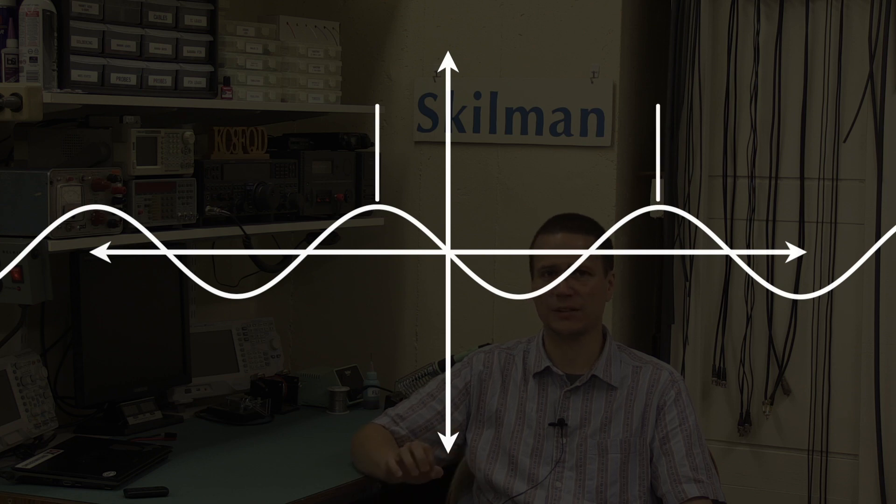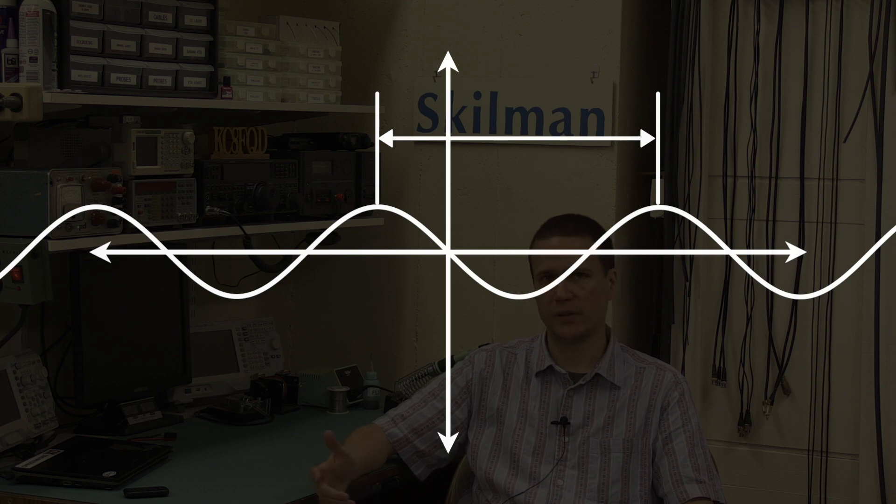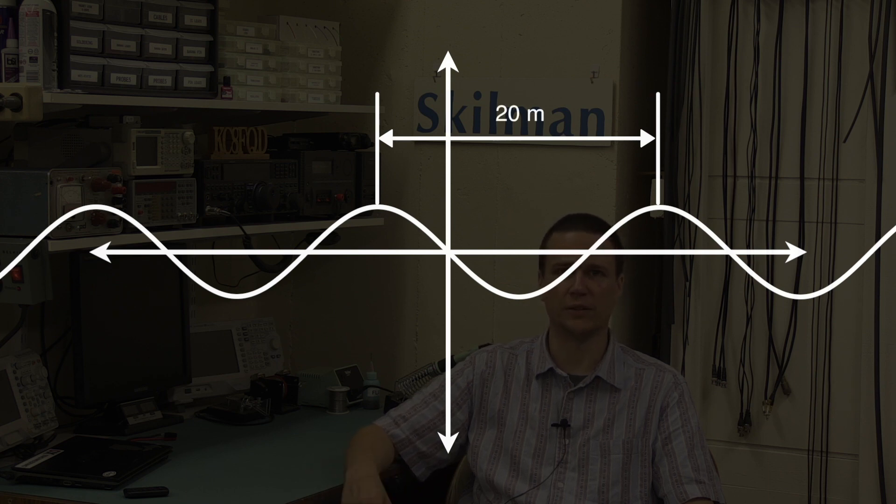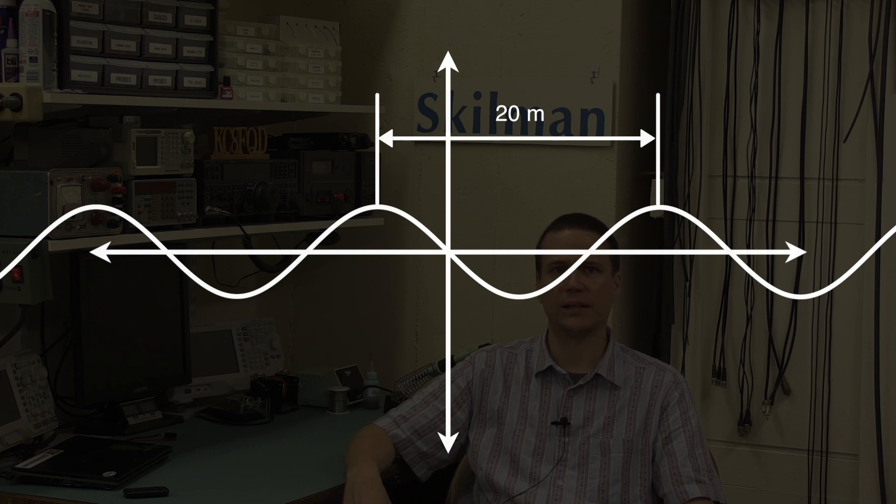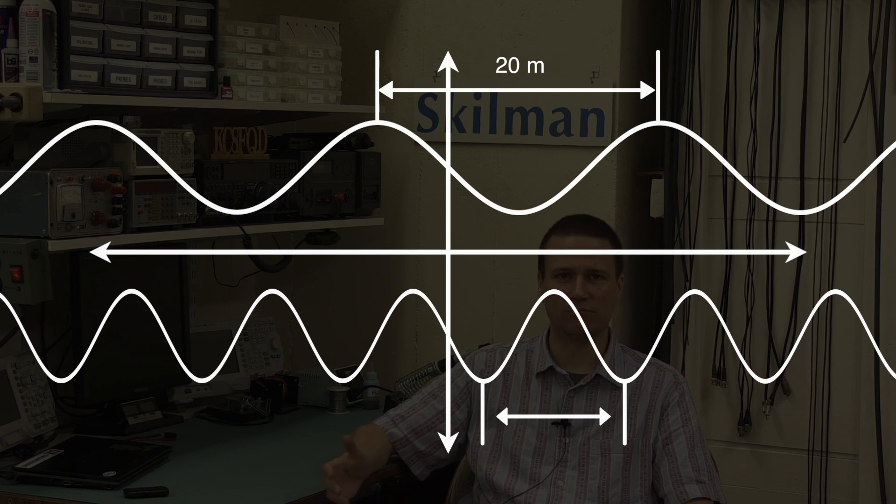The length of distance between these peaks is an important property of the wave, and we call it the wavelength. Now, let's suppose that this wave has a wavelength of 20 meters, and let's imagine another wave with a wavelength of 10 meters.